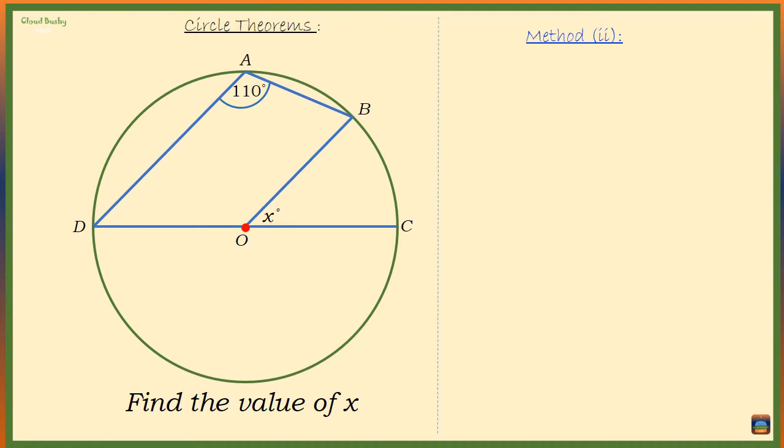Another way to find x is to consider the size of this obtuse angle DOB. Let's call it angle y. Now at the center of the circle we have two angles: y and this reflex angle DOB. We know that DOB reflex is equal to 220 degrees.